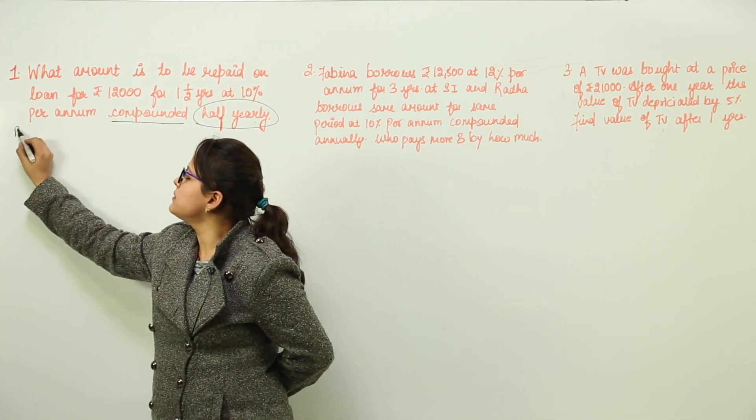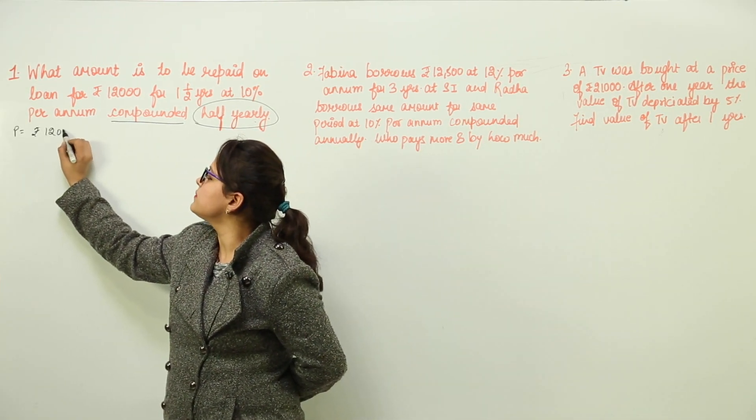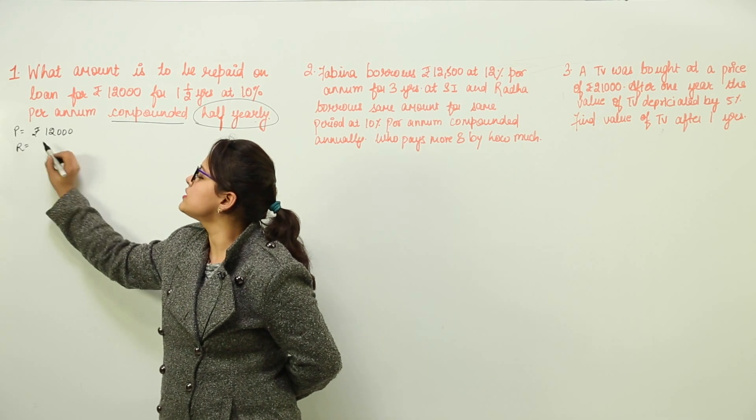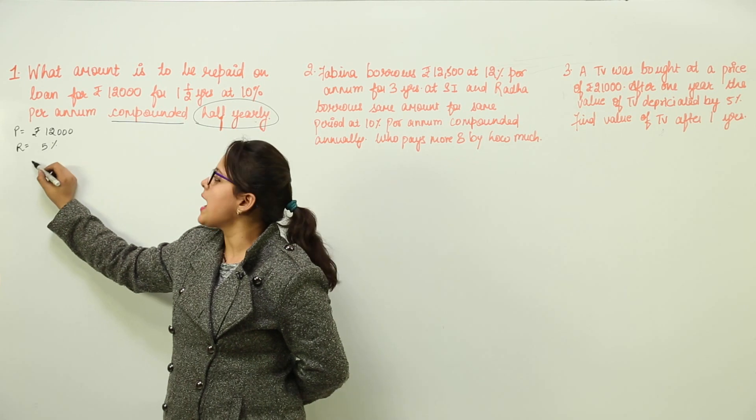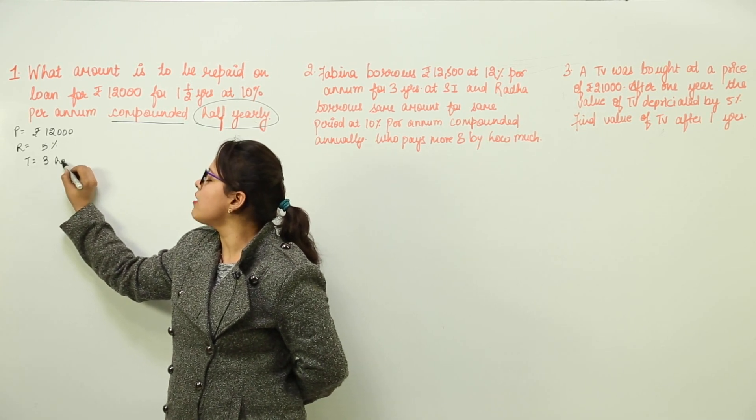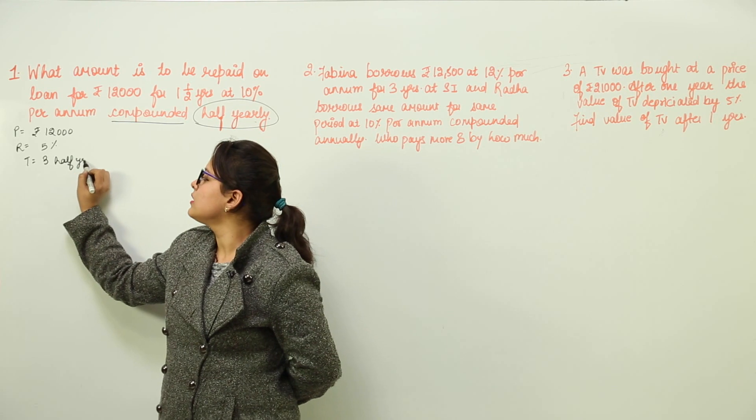Now, the principle that we have is Rs. 12,000. The rate of interest for half yearly purposes will remain 5% and the time period would be 3 half years. Clear?